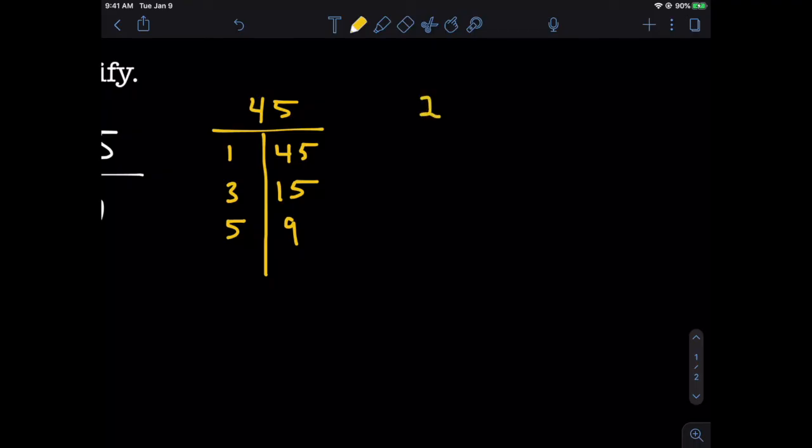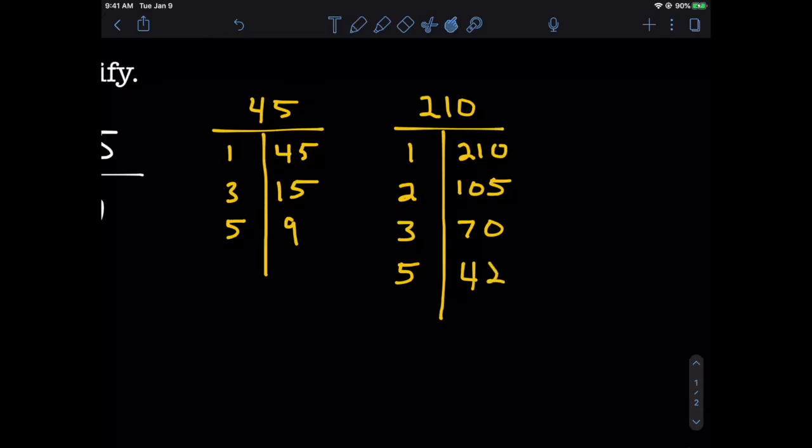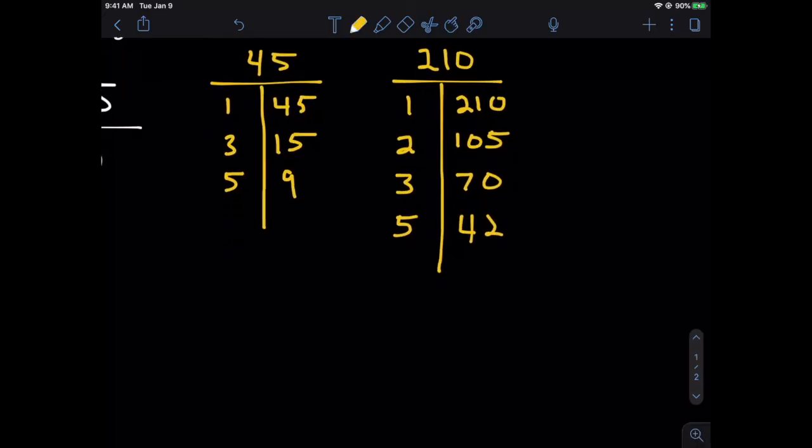So now we're going to do the same thing for 210. We put 210 over the t-table here, and then we list all the things that we can divide by. 210 divided by 1 is 210. It's even so we could divide it by 2. 210 divided by 2 is 105. Its digits add up to a multiple of 3, so we could divide it by 3. 210 divided by 3 is 70. Can't do 4, but since it ends in 0, we can divide by 5. 210 divided by 5 is 42. Look at this. It's going on and on.